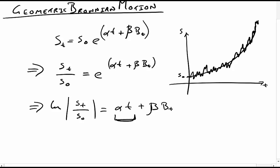This term here — the alpha t term — will contribute to the mean. And this other term basically means that the mean of the Brownian motion part is zero.